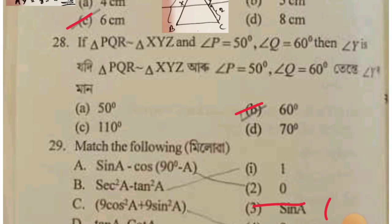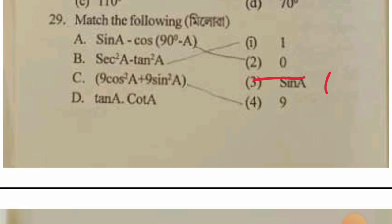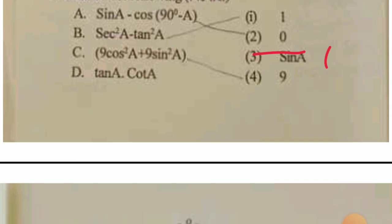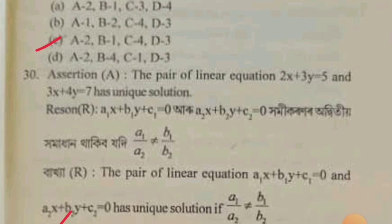So the average is: sin A minus cos(90 minus A) equals 0, because sin A equals cos(90 minus A). So that equals 0. Next: 6 sin²A minus 3 sin²A is... wait — 9 cos²A plus 9 sin²A equals 9. And 10A cos 1 equals 1. Option C2. This is just 1. And 3² is 9.